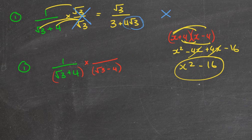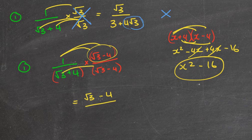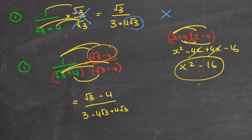So why create a difference of two squares here? I need to times the top and bottom by the same amount. Let's expand and see what happens. One times root three is just root three; one times minus four is just minus four. Now expanding the bottom: root three times root three is positive three, root three times negative four makes negative four root three, then four times root three is plus four root three - you can see those two middle terms will cancel - and four times negative four is negative 16.